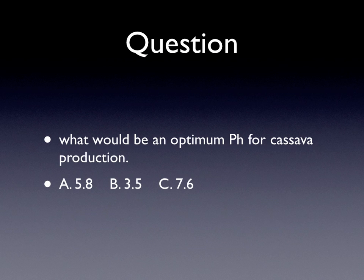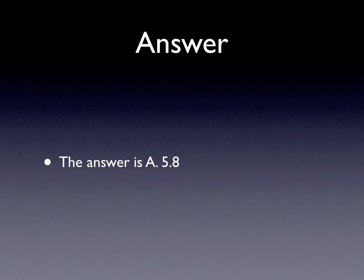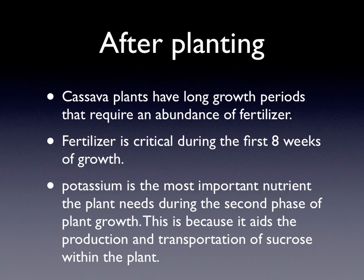Question: What would be an optimum pH for cassava production? A) 5.8, B) 3.5, or C) 7.6? The answer is A) 5.8. Optimum growing conditions for cassava are between 5.5 and 6.5.